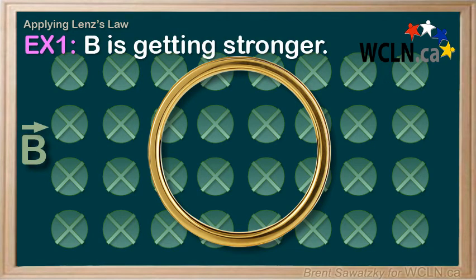We have a ring in a magnetic field. The magnetic field is going into the page and it's getting stronger. To oppose this change in flux, we need to resist this change. So if it's going in and getting stronger, to resist would mean that our induced magnetic field would have to be coming out through the loop.